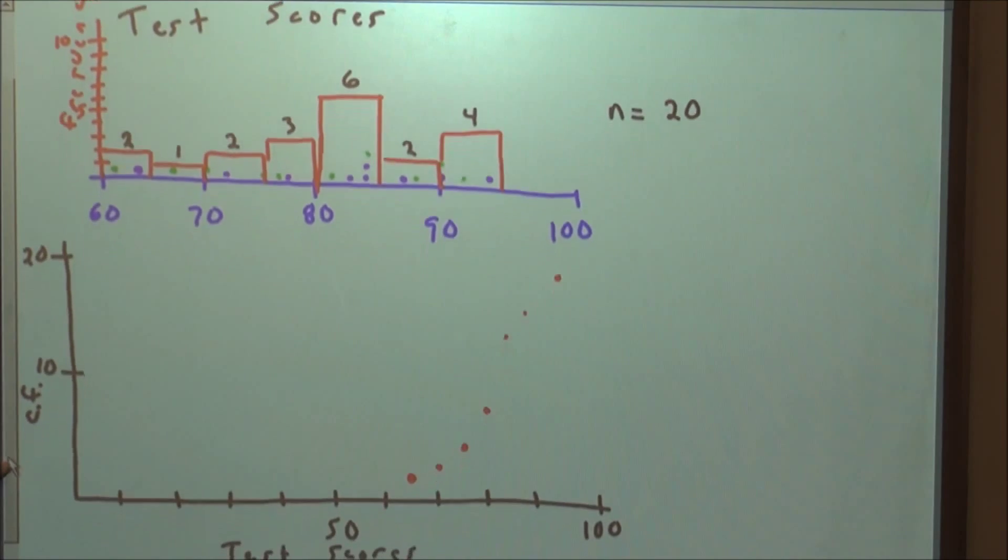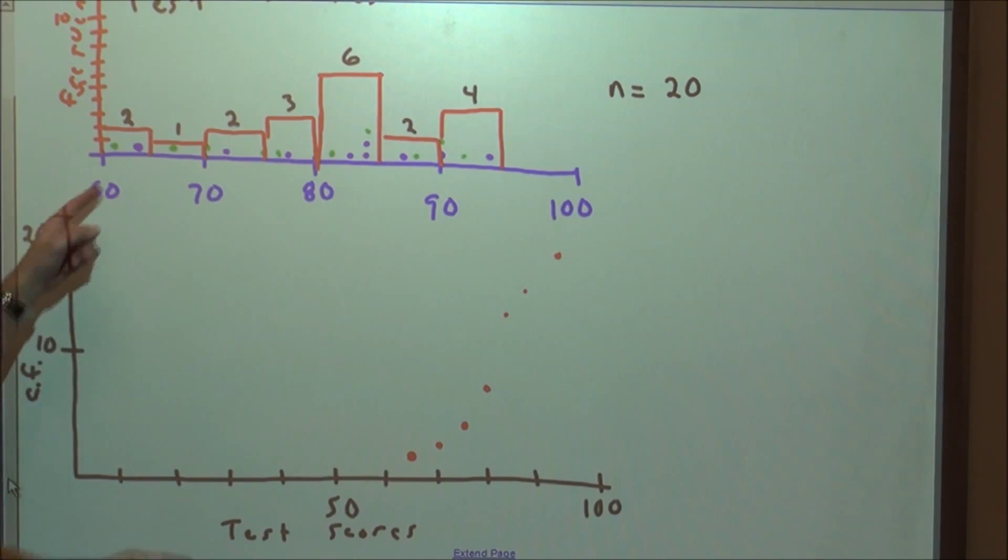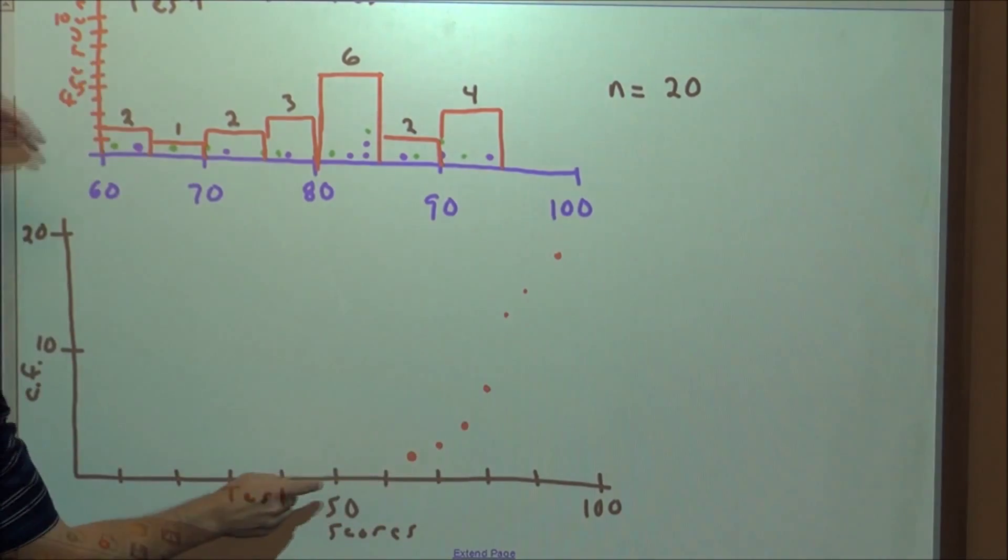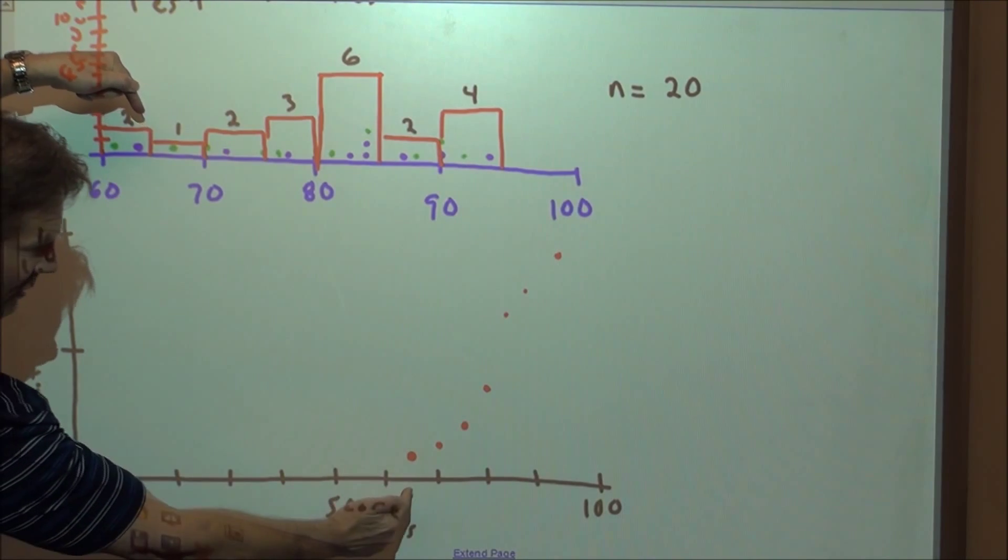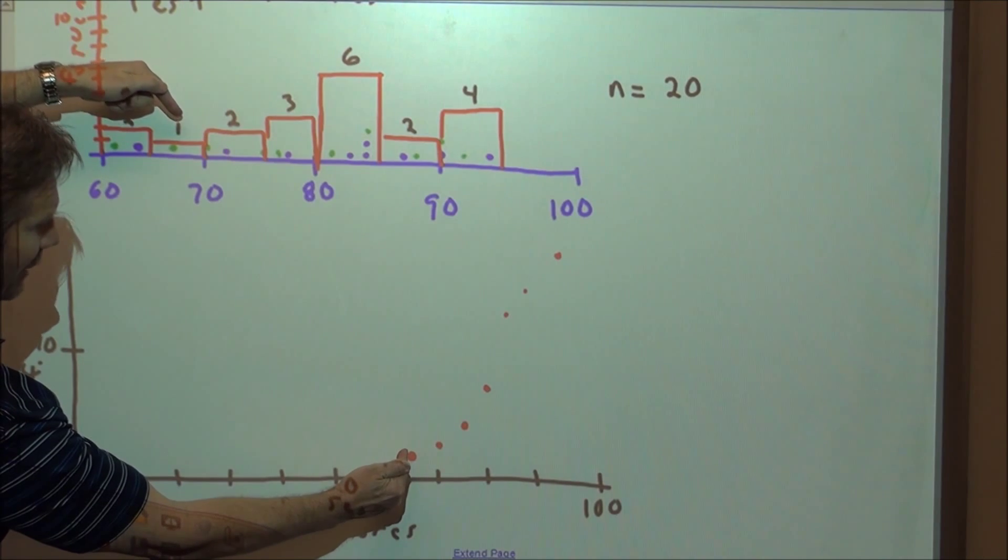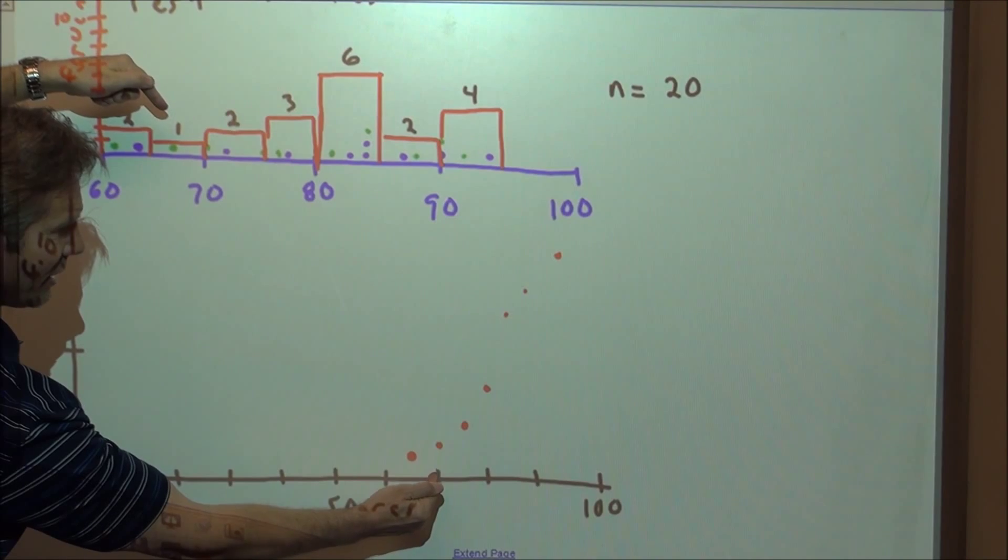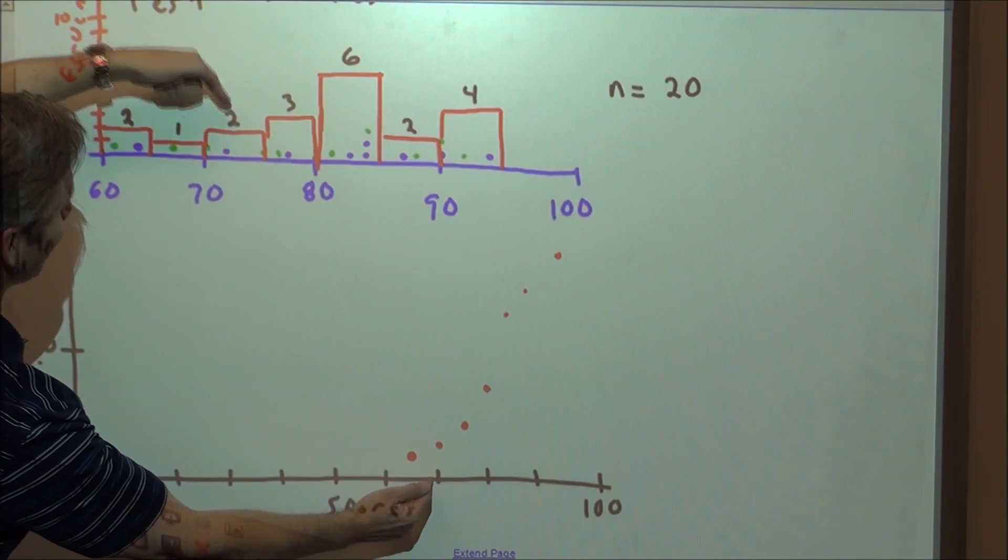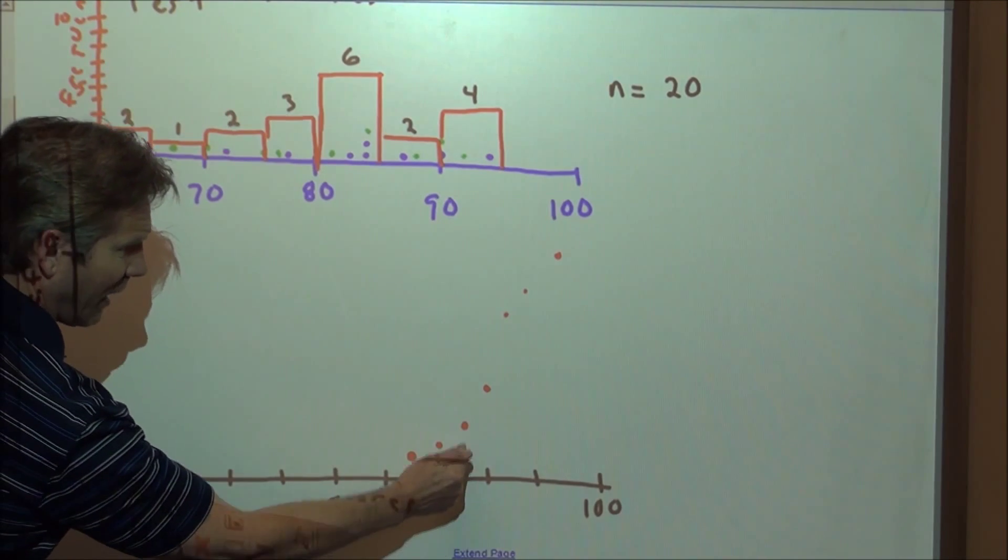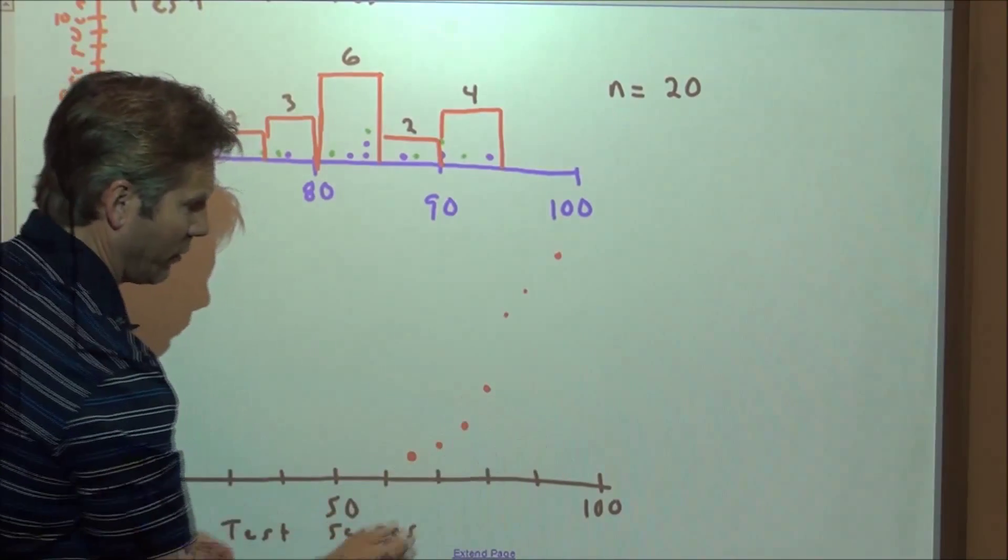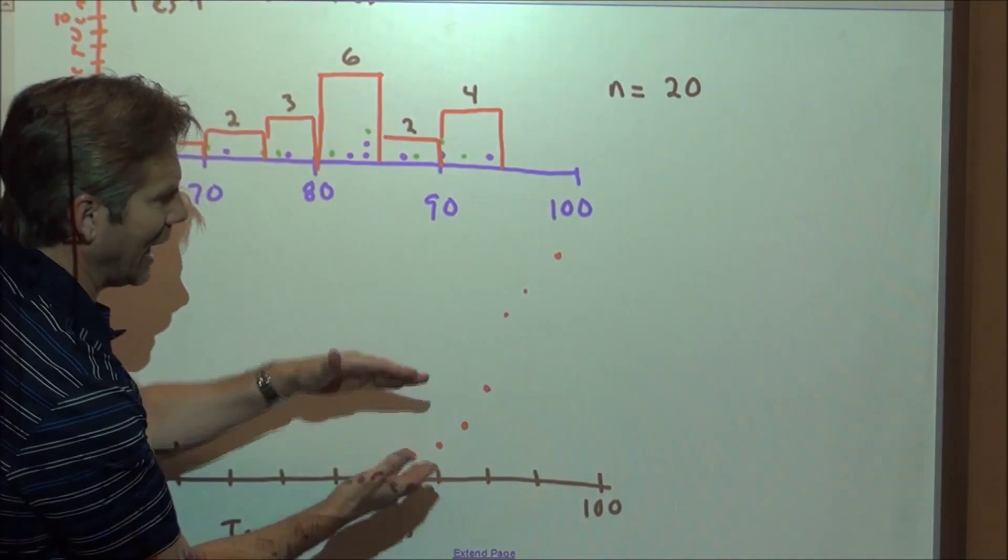Now what happens with a cumulative frequency distribution, an ogive is, you can see that the lowest score in our data set is somewhere at about 60. So we don't see scores show up until we get to 60 or higher. Now what happens is we have two scores by the time we get to 65. So by the time we get to 65, we're at two scores. We pick up one more score by the time we get to 70. So by the time we get to 70, we have a total cumulative frequency of three.